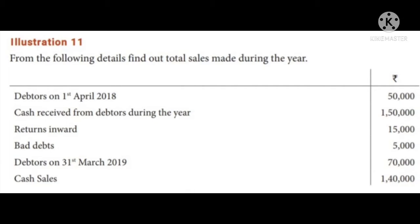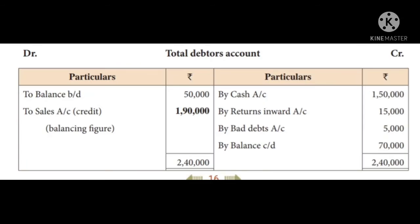To find total sales, we first need to calculate credit sales using the Total Debtors Account. On the debit side, we have the opening balance brought down: 50,000. On the credit side, we have cash account: 1,50,000 (cash received from debtors).